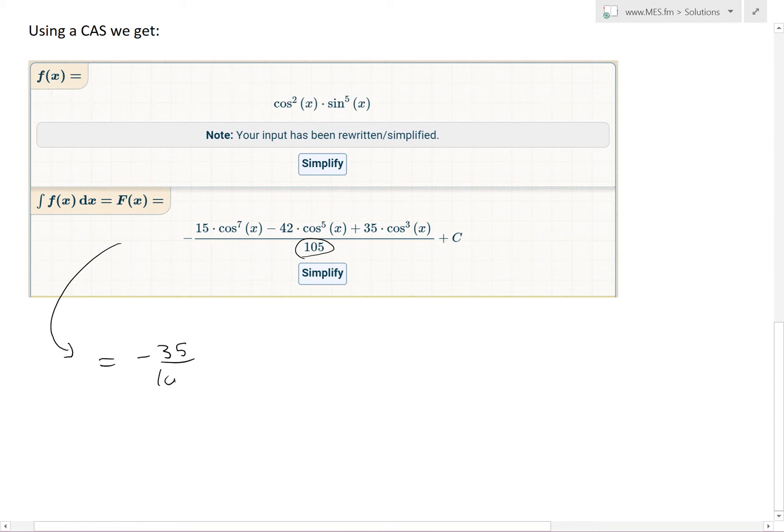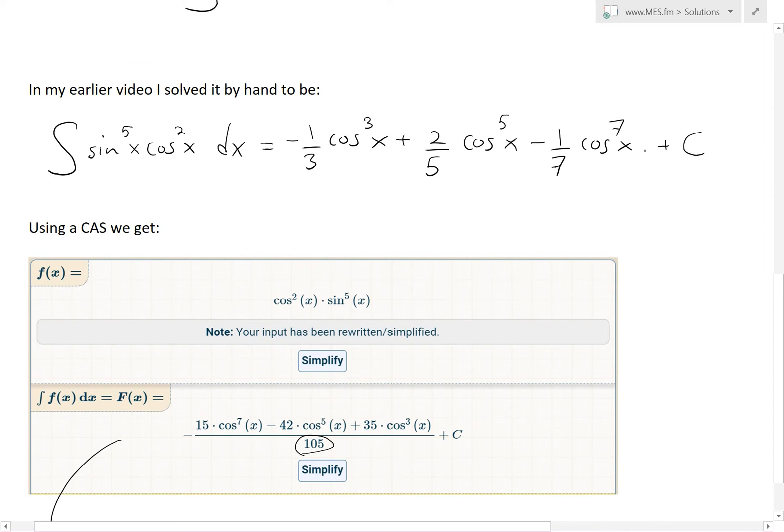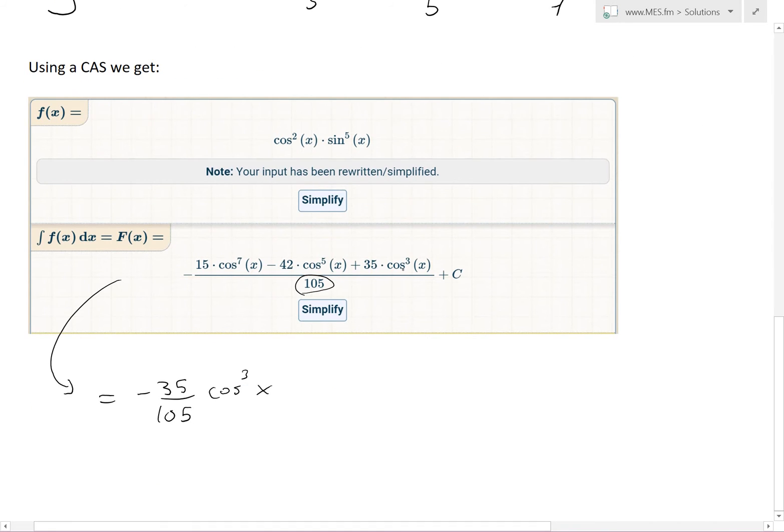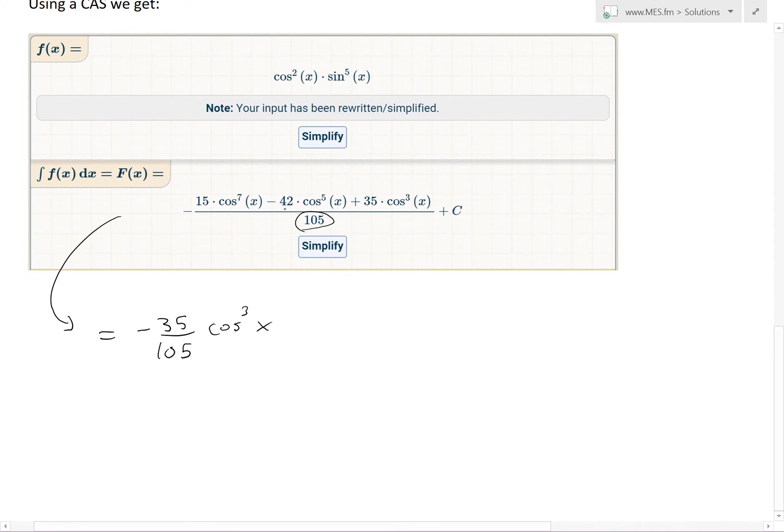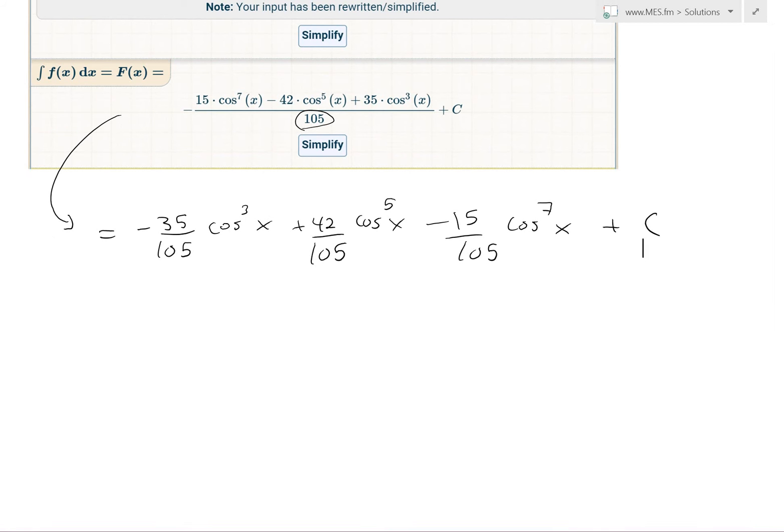Basically, if we divide this out and put this negative inside, I'll show you that it's exactly the same thing. So negative 35 over 105 cos 3x. I'll put it in the same order that we had in our answer, so it's increasing instead of decreasing. So now the second one is going to be plus 42 over 105 cos power of 5 of x. And then the last one is minus 15 over 105 cos 7 of x plus constant c.